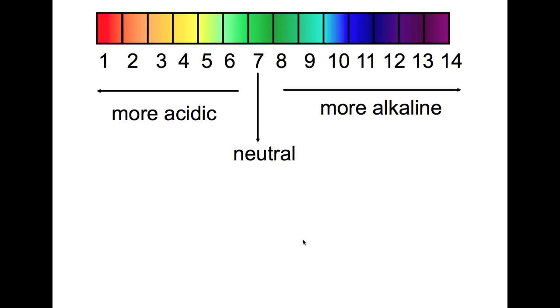First of all, we'll start by looking at the pH scale again. So here is the pH scale, it runs from below 1 to above 14. All the numbers below 7 are acidic, all the numbers above 7 are alkaline, and then 7 itself is neutral. Today we're going to be looking at how we can use the acidic and alkaline pHs to make something which is neutral.